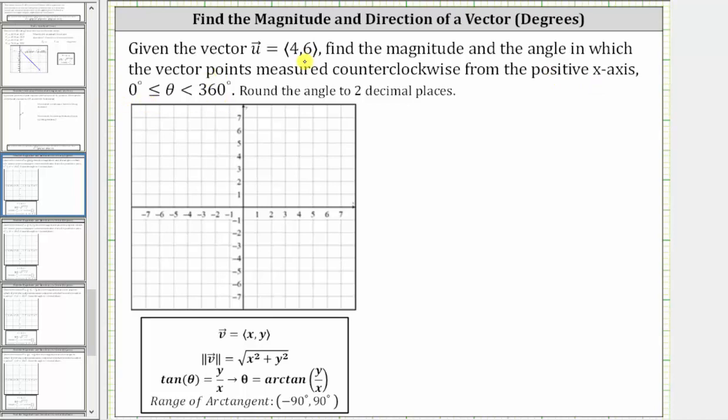Let's first sketch the vector in standard position, which means the initial point is at the origin. Because the x component is four, we move right four units, and because the y component is six, we move up six units to determine the terminal point of the vector in standard position.